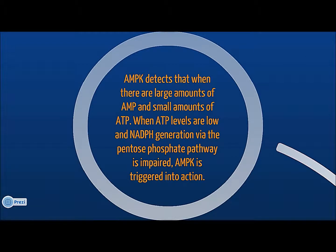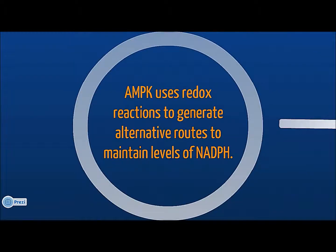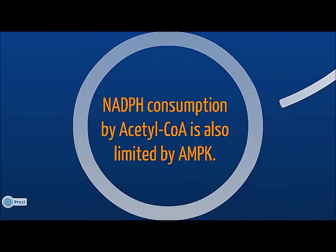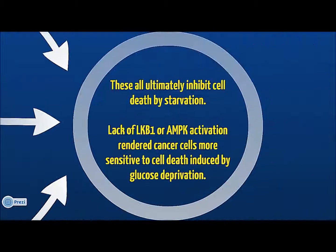AMPK uses reduction-oxidation reactions to create alternative routes to maintain levels of NADPH. AMPK also inhibits NADPH consumption by acetyl-CoA. These efforts together help inhibit cell death by starvation. The lack of either LKB1 or AMPK activation rendered cancer cells more sensitive to cell death induced by glucose deprivation.